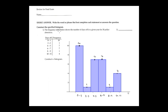The frequency table, number one: the frequency table shows the number of days off in a given year. The data is: 0 to 1 is 10, 2 to 3 is 1, 4 to 5 is 7, 6 to 7 is 5, 7, 8 and 9 is 1, and 10 and 11 is 4.